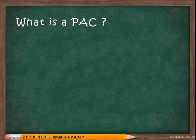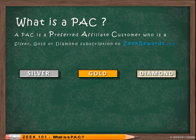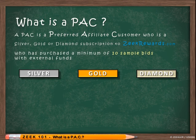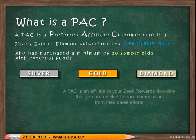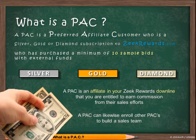A PAC is a preferred affiliate customer who is a silver, gold, or diamond subscriber to ZeekRewards.com and who has purchased a minimum of 10 sample bids with external funds. In other words, a PAC is an affiliate in your Zeek Rewards downline that you are entitled to earn commissions from based on their sales efforts, and a PAC can likewise enroll other PACs to build a sales team.